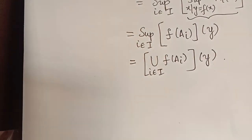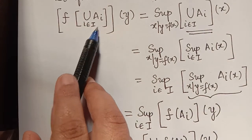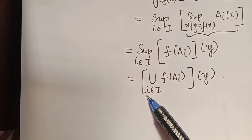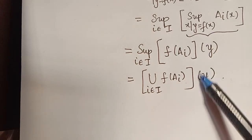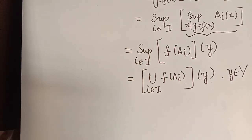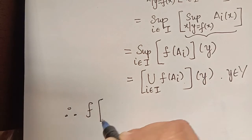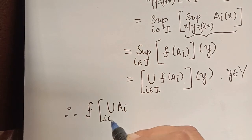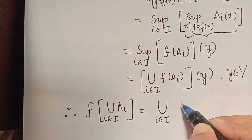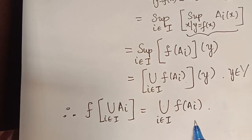Therefore, we started with f of union Ai for i an element of capital I of y, and we have obtained that to be equal to union of f of Ai for i an element of capital I of y. This holds for one particular value y in capital Y, so we can generalize it: f of union Ai for i an element of capital I equals union over i an element of capital I of f of Ai. Hence we have proved property 3. Next we shall prove property 4.